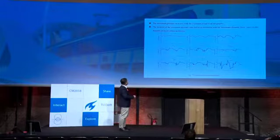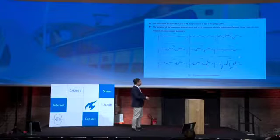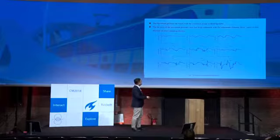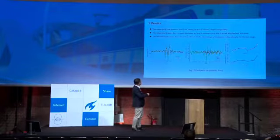I will also present the variation of pressure. We can see the pressure increases with the evolution of rail weld irregularity. We also observe that the location of maximum pressure may not be consistent with the location of maximum dynamic force, since it also depends on local geometry. For instance, for the last case, the maximum pressure is located at the first peak, while the maximum dynamic force appears at the second location.